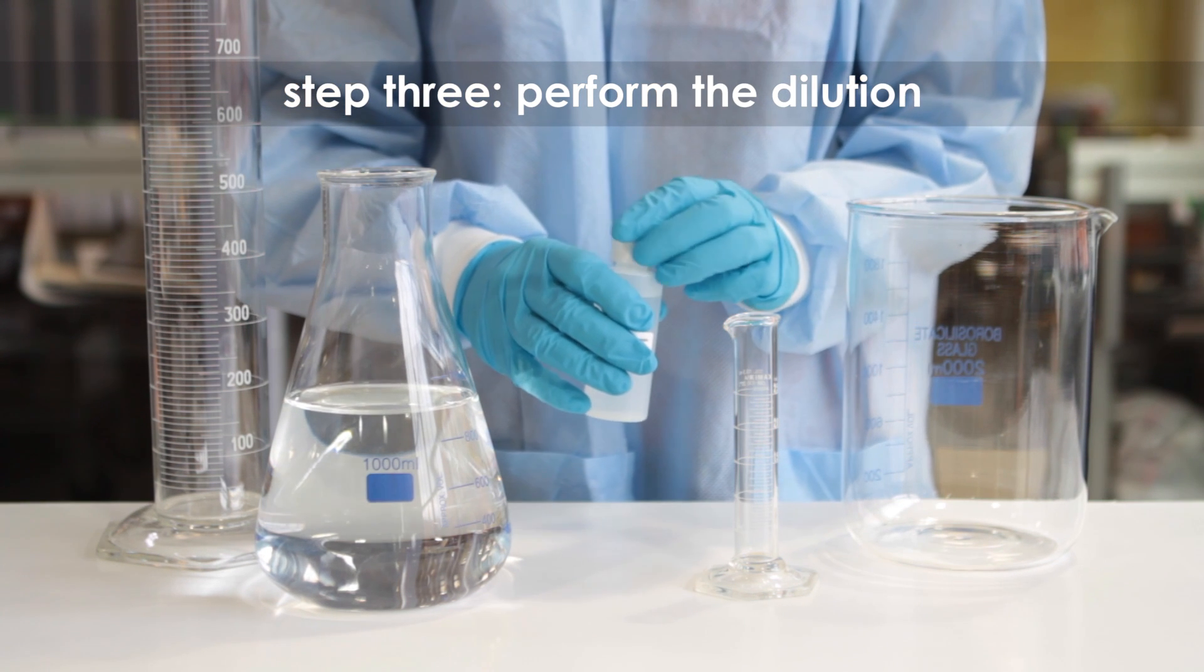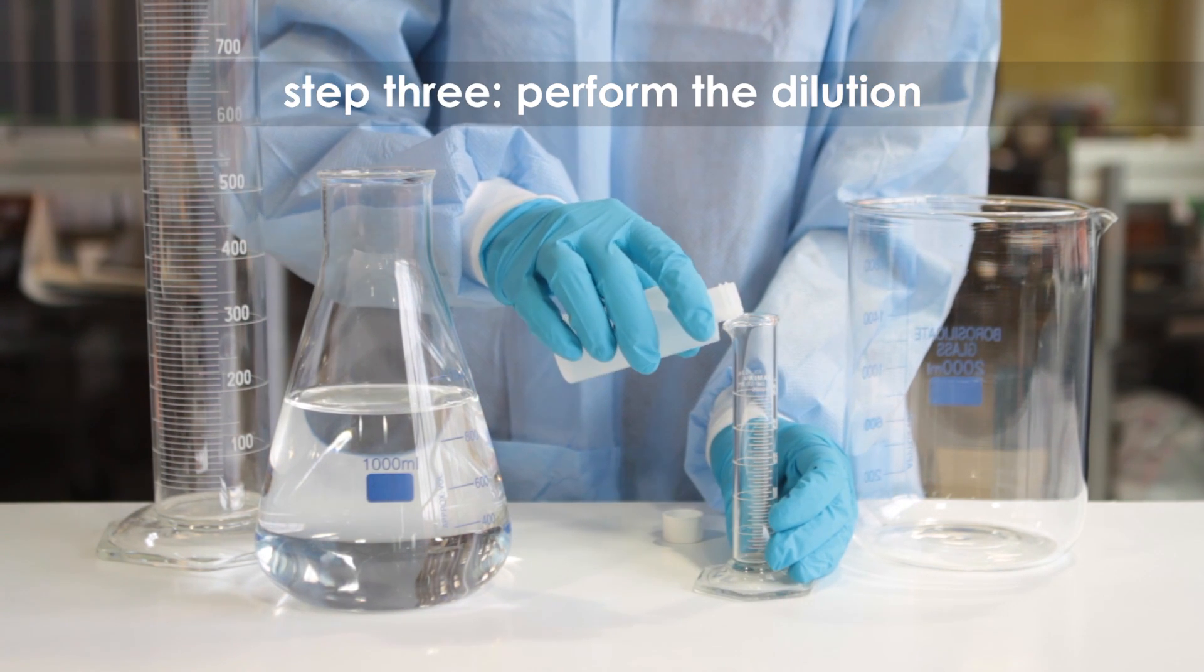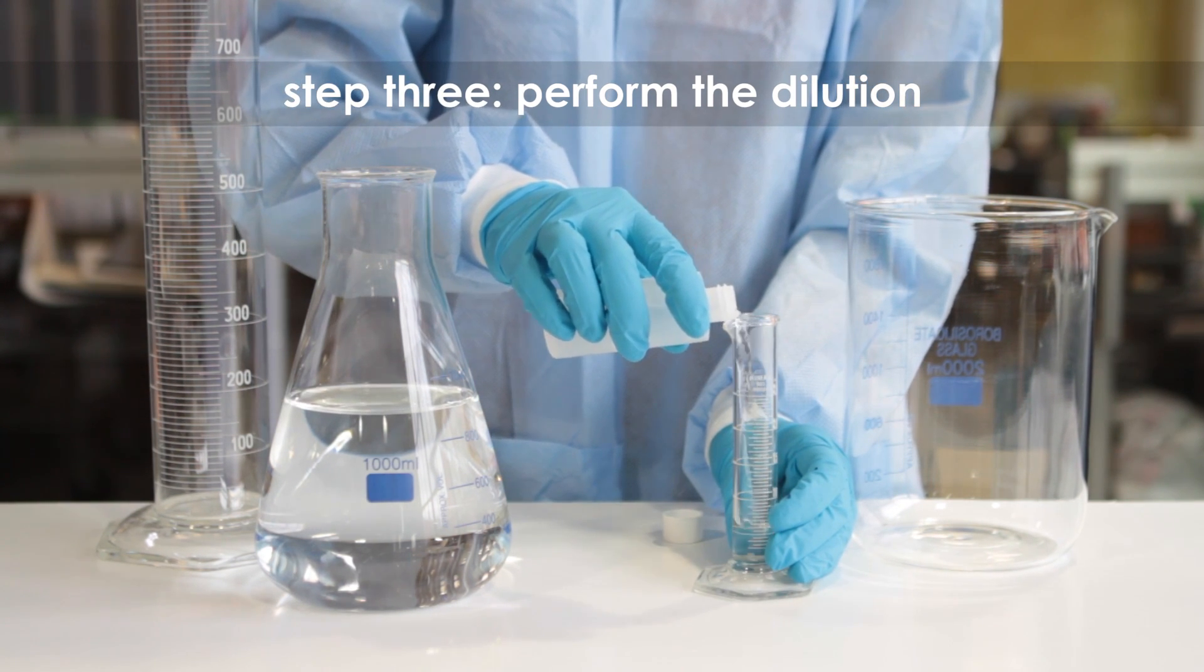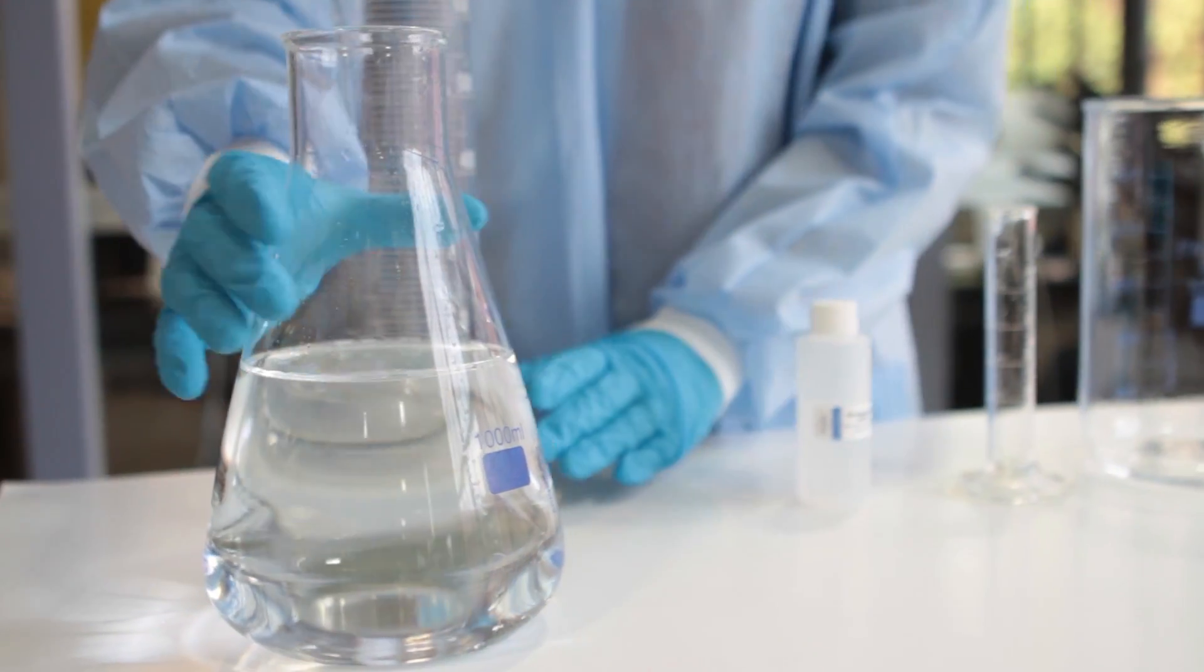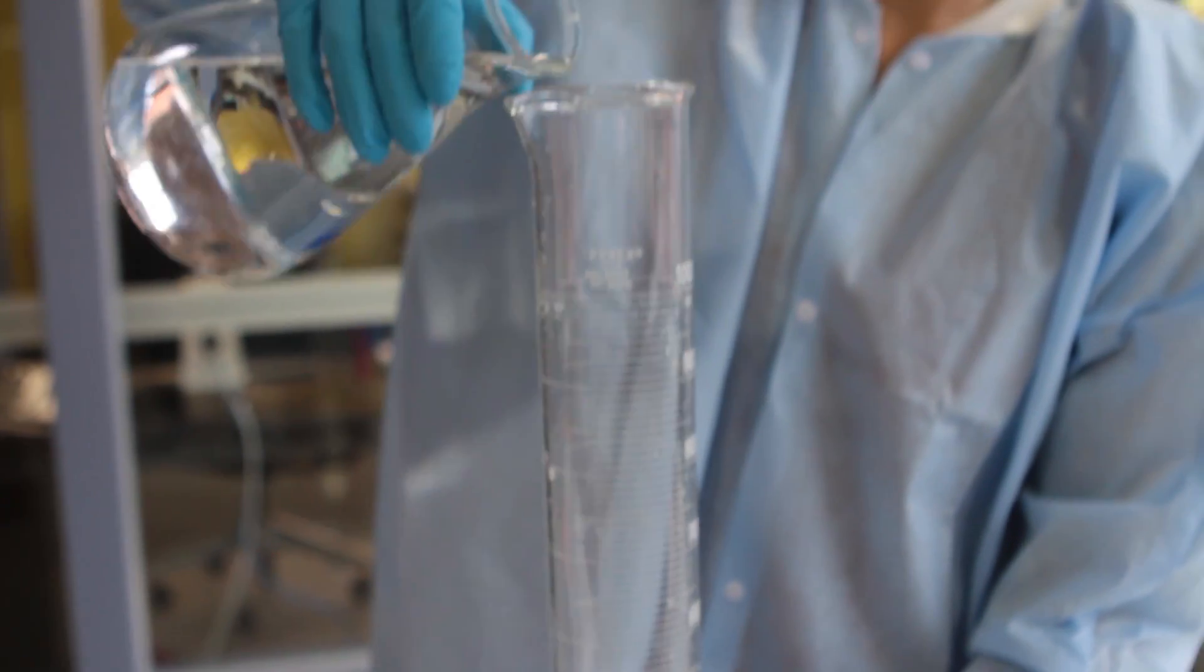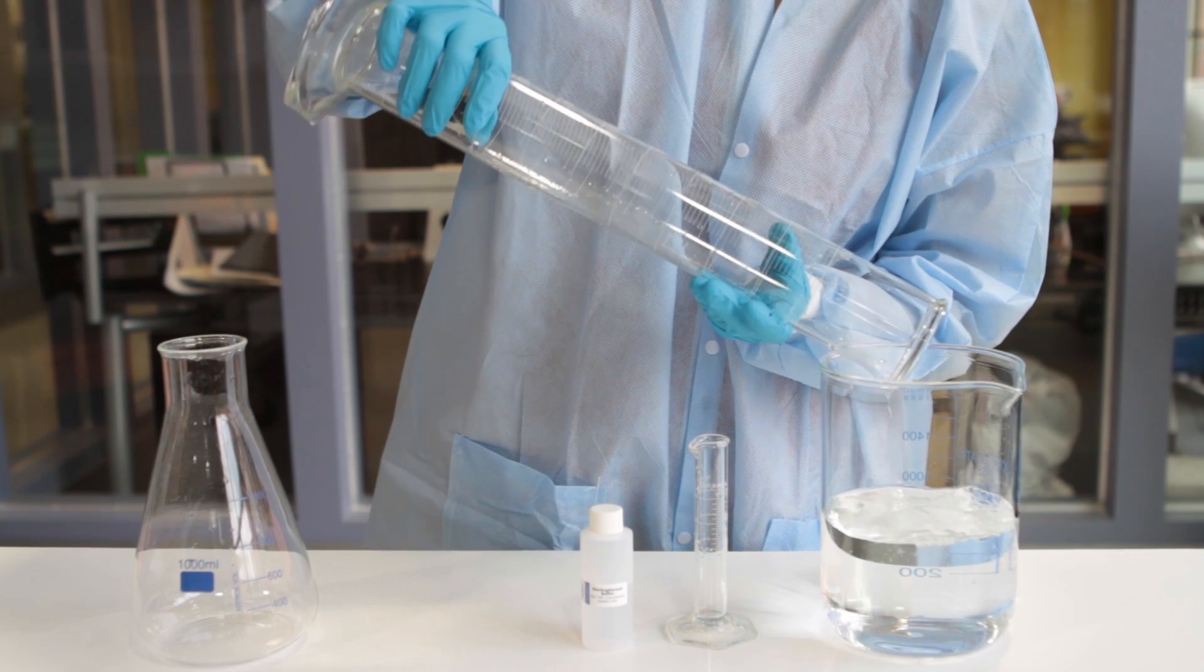Step 3. Perform the dilution. To make 1,000 milliliters of 1x TAE, begin by adding 20 milliliters of the 50x TAE to a large beaker. Next, measure and add 980 milliliters of distilled water to the beaker. After you add the water, the final volume will be 1 liter. Mix thoroughly before using.